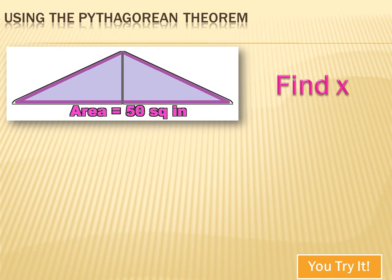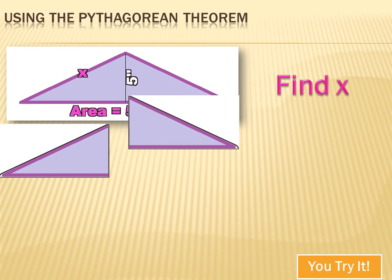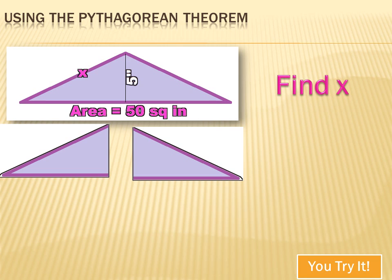This one's a little tricky. We're shown a triangle where the area is 50 square inches and the height is 5 inches, and we're asked to determine the length of one side. It doesn't seem to involve a right triangle, and the Pythagorean theorem only relates to right triangles. But wait — I can see a right triangle inside it, and an identical right triangle on the other side. I can think of those as two separate right triangles.